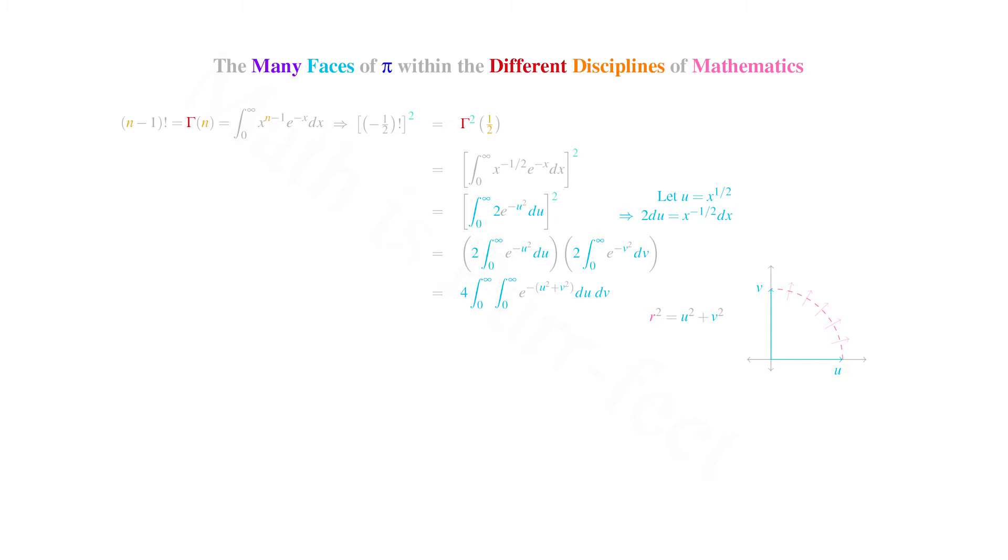As u and v are both evaluated from 0 towards the infinite, that is, both are greater than or equal to 0, we are restricted to the first quadrant, meaning that the angle theta varies from 0 to pi over 2. The Jacobian of the transformation from rectangular to polar coordinates is, of course, r dr d theta. Hence, our double integral may now be expressed as a double integral with integrand e raised to the minus r squared times r dr d theta, where the radius r varies from 0 to infinity, and the angle theta is from 0 to pi over 2.